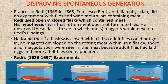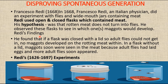What was Redi's experiment? Francisco Redi in 1668, who was an Italian physician, did an experiment with flies and wide-mouth jars containing meat. His hypothesis was: where do maggots come from? He hypothesized that maggots come from flies — that maggots are not generated from the meat itself, but come from flies.